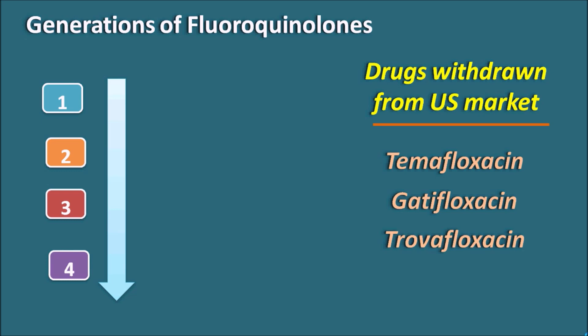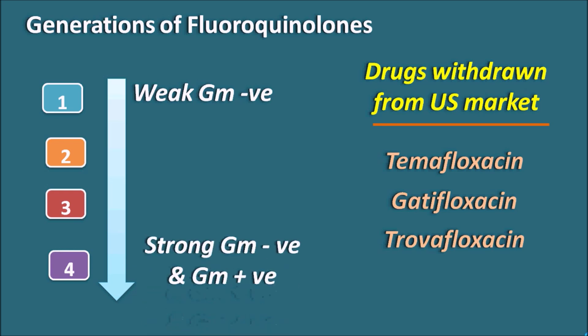The first generation is the old generation and the fourth generation is the new generation. Old generation fluoroquinolones are effective against gram-negative infections but have weak activity. As we proceed to the new generation, they have strong activity against gram-negative infections as well as extended activity towards gram-positive infections. The new generation drugs are also useful in the treatment of atypical organisms and anaerobic organisms.